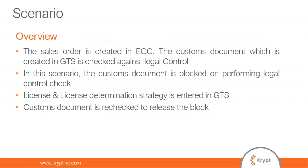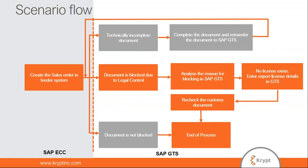In a typical scenario: a sales order is created in ECC; a customs document is created in GTS and a compliance check is performed covering SPL, embargo, EHS, letter of credit, and legal control. For legal control, the license is checked and the customs document may be blocked. We then create a license and recheck the document to release the block. If a document is technically incomplete, we complete it first and then the compliance check is performed.